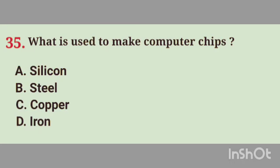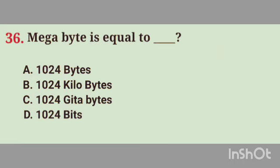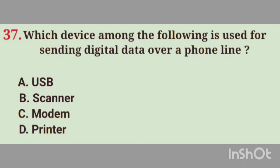Question No. 35. What is used to make computer chips? Right answer, Option A. Silicon. Question No. 36. Megabyte is equal to dash. Right answer, Option B. 1024 kilobytes.